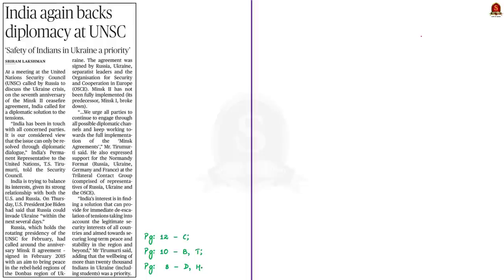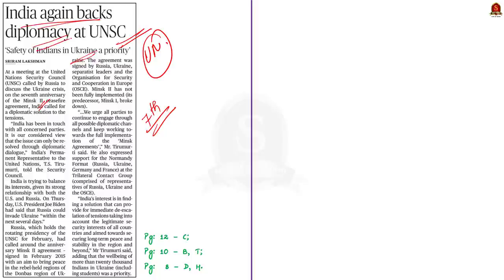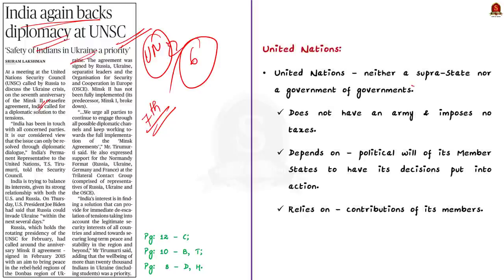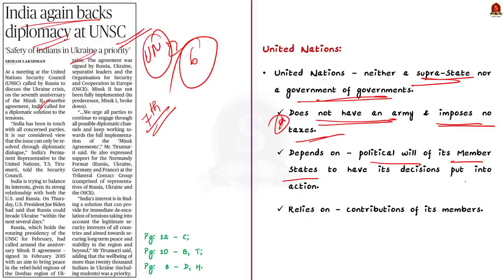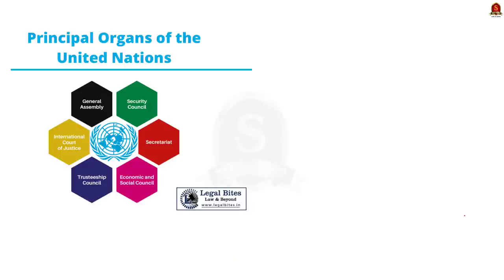This news article talks about the United Nations Security Council, which is a principal organ of the United Nations. In a meeting at the UNSC called by Russia to discuss the Ukraine crisis on the seventh anniversary of the Minsk ceasefire agreement, India was called for diplomatic solutions to the tensions. India again backed diplomacy at the UNSC. In this context, let us quickly brush through the six principal organs of the United Nations. The United Nations is neither a supra-state nor a government of governments — it has no army and imposes no taxes. It depends on the political will of its member states.